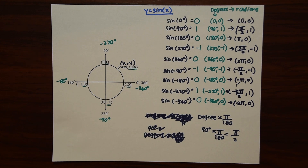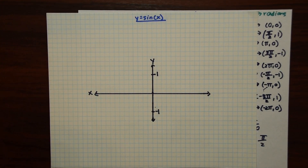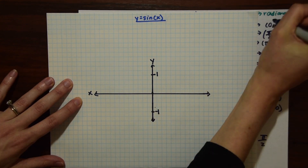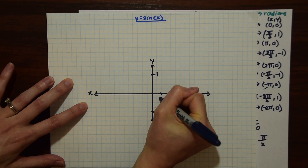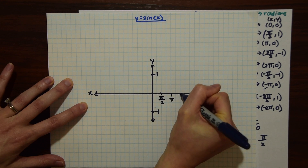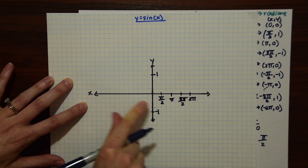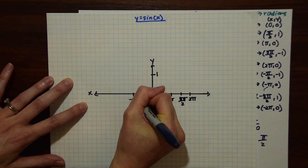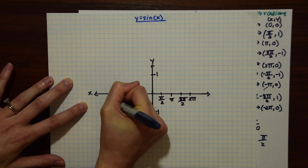Now we can actually plot our points and graph this. Let's take out our graphing paper and leave our coordinates to the side so we can see them. All the radians are our x values and these are our y values. Let's graph our x values along the axis: we have pi over 2, pi, 3pi over 2, and 2pi — and the same thing on the other side, negative: minus pi over 2, minus pi, minus 3pi over 2, minus 2pi.